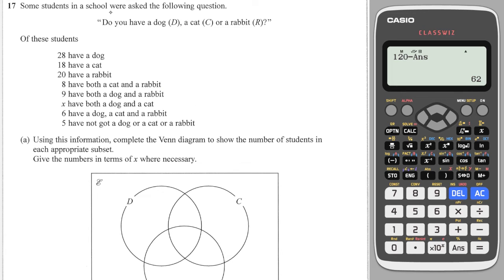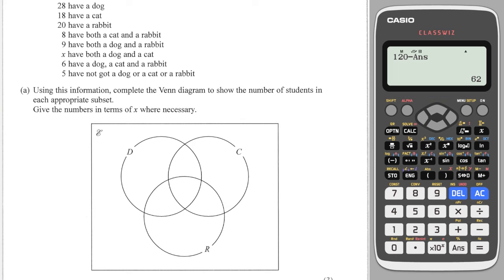Final question: some students in a school were asked the following question—do you have a dog, a cat, or rabbit? Of these students we have this number, so again we might have people which aren't in any of these categories. We will start with the center if we can, and that's that 6 people have a dog, cat, and rabbit, so that goes in the center. Let's fill out other ones: 9 have a dog and rabbit, which means that 3 goes in here. We also can see here that 20 have a rabbit and we've got most of the rabbit section filled out. 3, 6 is 9, plus 2 is 11, so 9 makes up the 20. Actually I could have done this one at the start: 5 have not a cat, dog, or rabbit, so 5 goes on the outside.